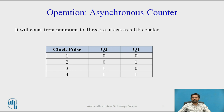The state table of a 2-bit asynchronous counter shows it counting from a minimum of 0 to a maximum of 3, acting as an up counter. Note that there is a small delay between the clock, Q1, and Q2 transitions in the timing diagram. All clear inputs are connected together so that a single pulse can clear all the flip-flops before counting starts.